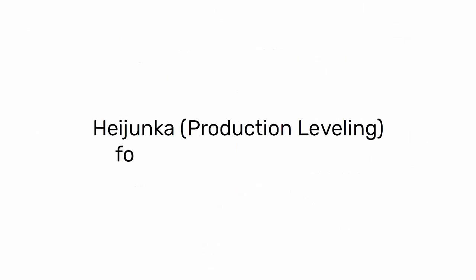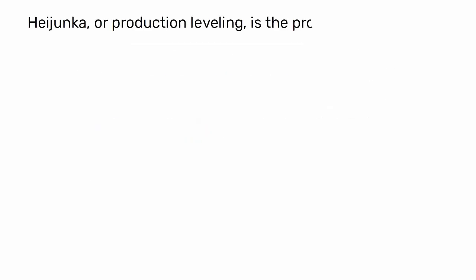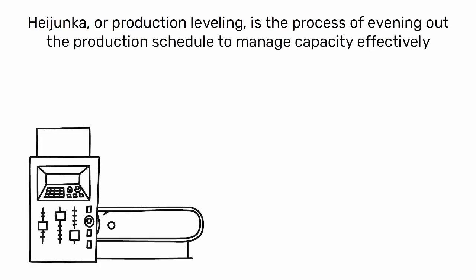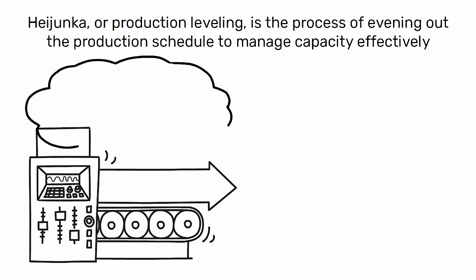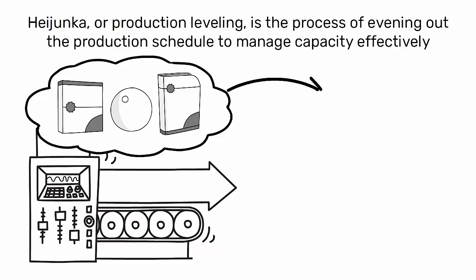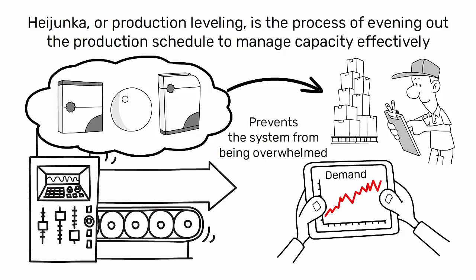Heijunka: production leveling for capacity management. Heijunka, or production leveling, is the process of evening out the production schedule to manage capacity effectively. It involves producing a consistent mix of products in a regular sequence to absorb demand variability. This leveling is essential for capacity management as it prevents the system from being overwhelmed by demand spikes and troughs.